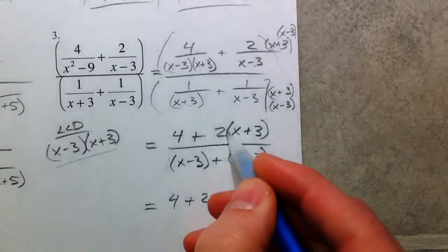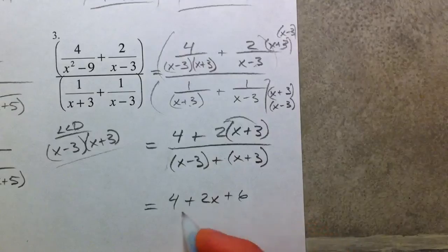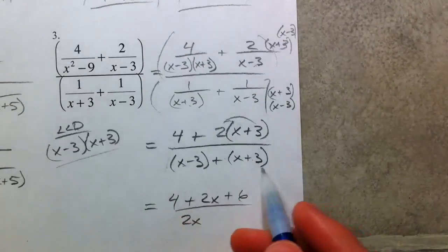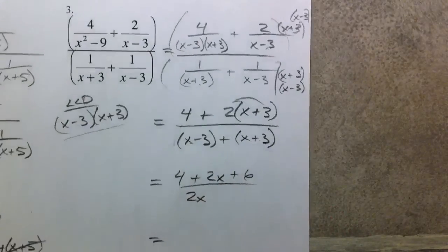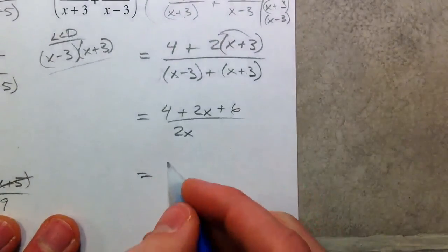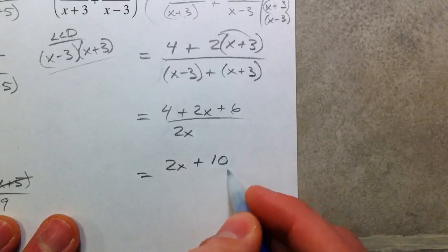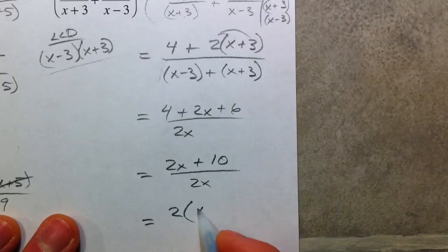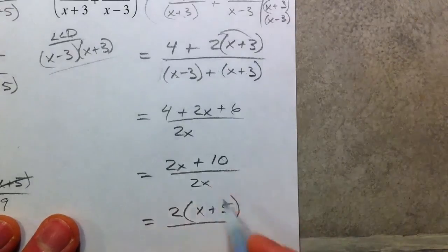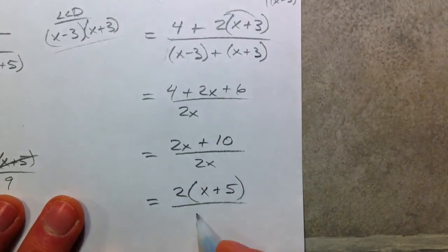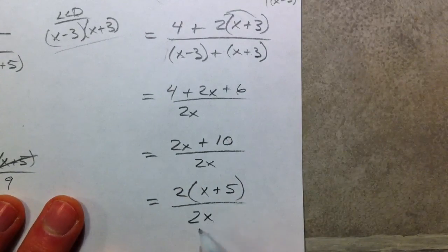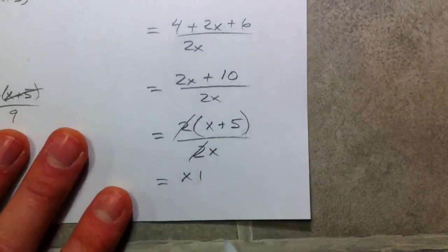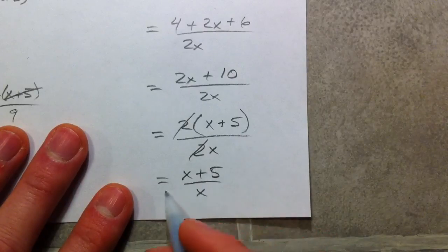Now simplify. 4 plus 2x plus 6 over. x and x make 2x. Negative 3 and 3 cancels each other out. So we get 2x plus 10 divided by 2x. And so then we have 2 times x plus 5. Because I noticed they all have a 2 in them.